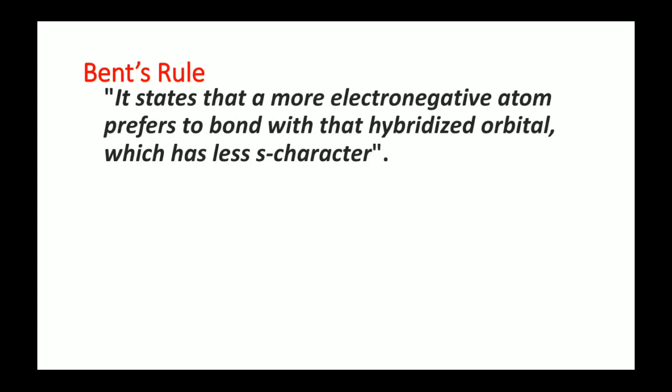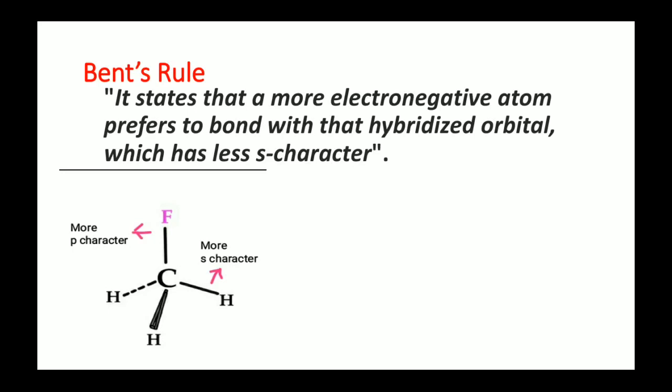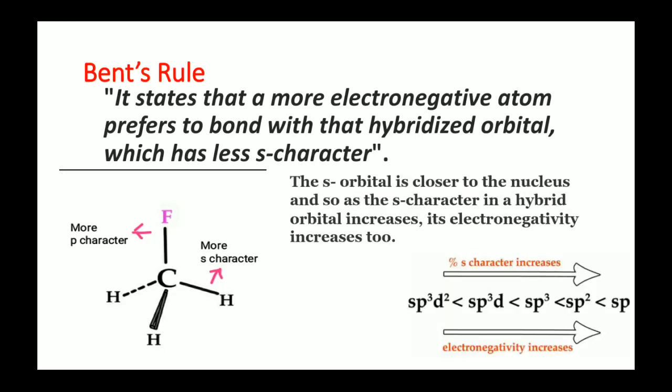Here you can see a molecule of CH₃F. Fluorine has more electronegativity than hydrogen, and hence the C–F bond will have less S character and the C–H bond will have more S character. This is because the S orbital is closer to the nucleus. S character in a hybridized orbital means that orbital will have more electronegativity, as it is closer to the nucleus. S has higher penetrating power, and S electrons feel more effective nuclear charge (Z*).